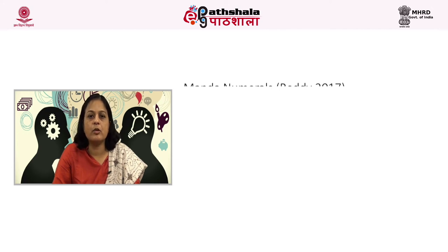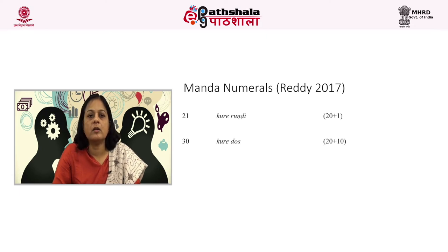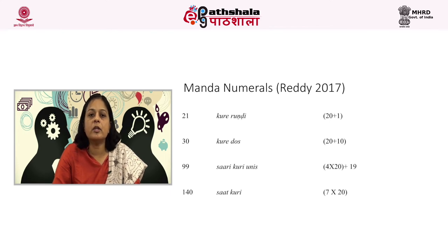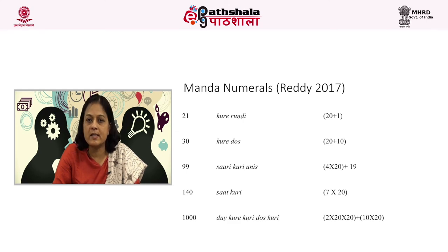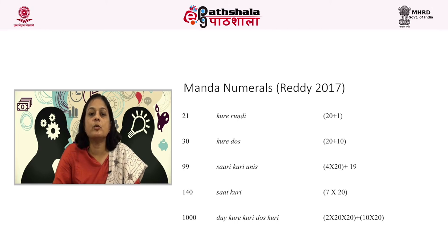For example: 21 in Munda is 'kude rundi' (20 plus 1); 30 is 'kude dos' (20 plus 10); 99 is 'sari kude unis' (4 times 20 plus 19); 140 is 'sath kude' (7 times 20); and 1000 is 'dui kude kude dos kude' (2 times 20 times 20 plus 10 times 20).